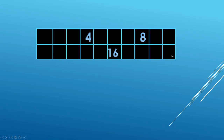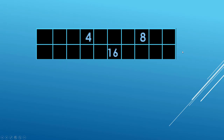Two times ten is twenty. Two times six is twelve. Let's clear the bottom row. Two times eight is sixteen. Eight times two is sixteen. Count them off: two, four, six, eight, ten, twelve, fourteen, sixteen, eighteen, twenty.